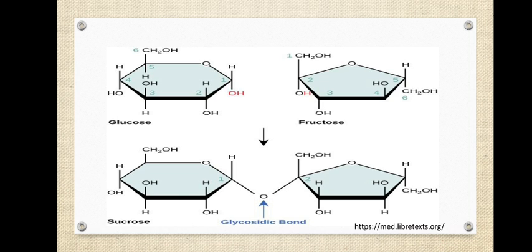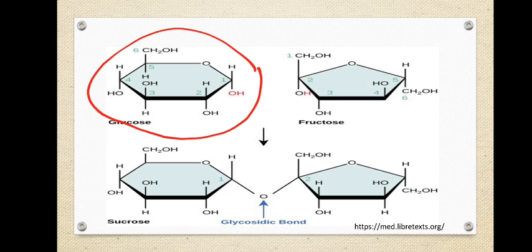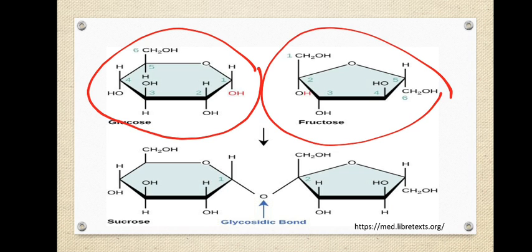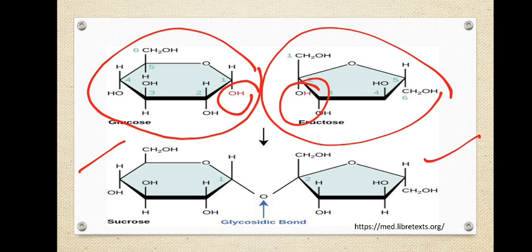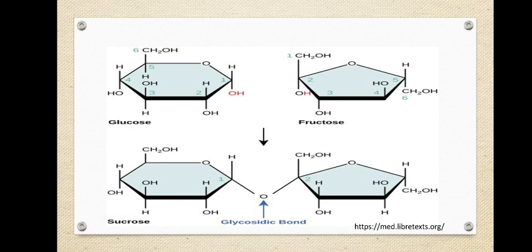Looking at the structure of sucrose on screen, each sucrose is formed of a molecule of glucose and a molecule of fructose. The site where the glycosidic linkage is formed is visible — a molecule of water is condensed there, resulting in a glycosidic bond between glucose and fructose to form sucrose. Sucrose is again a source of energy to the body.